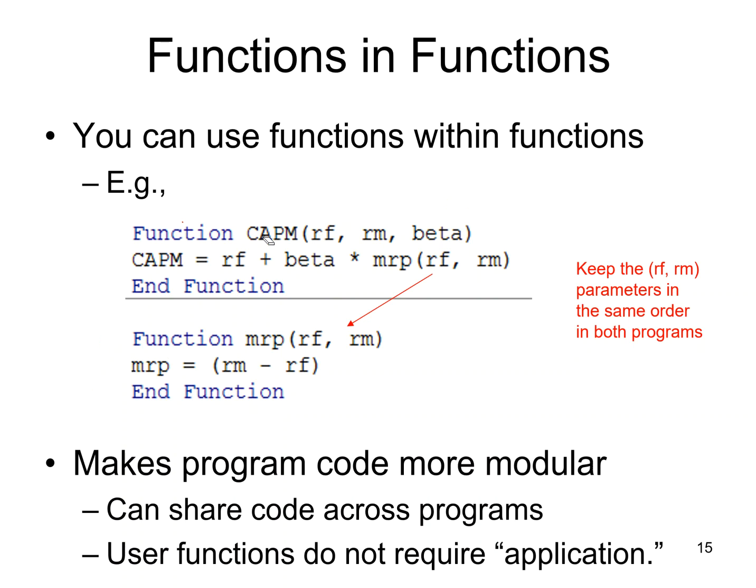In summary, you can call a function within a function. If it's another user-defined function, I don't have to use application dot. Application dot is only needed for built-in functions like STDEVP. As long as these parameters are in the same order - RF in the first place, RM in the second place, the same in both - it'll execute this line of code and return that value to the original function.